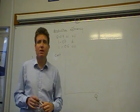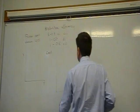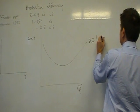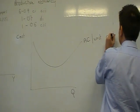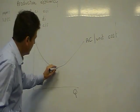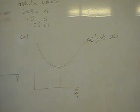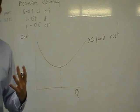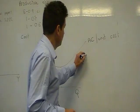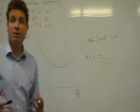So productive efficiency — what does it mean? Productive efficiency basically means, as this diagram will show you, when we have average cost — or what is sometimes known as unit cost — at its lowest. Productive efficiency occurs when average costs are at their minimum, meaning the firm is producing its output at the lowest possible cost. Average cost is purely total cost divided by quantity produced.